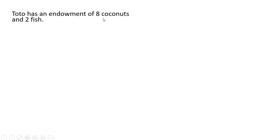Toto has an endowment of eight coconuts and two fish. His marginal rate of substitution of fish for coconuts is 2F divided by C, where F is fish and C is the number of coconuts.